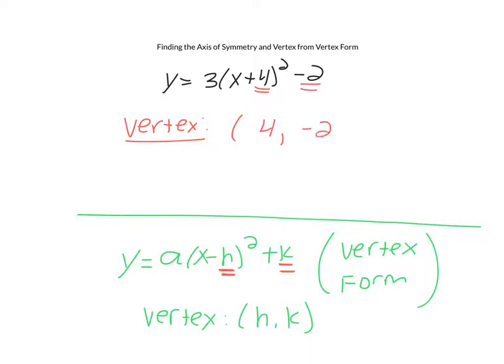But you have to be super careful. Because there's a negative sign built into the vertex form right here, the value that you want to call x in your vertex actually needs to have its sign reversed. So because it is a plus 4 in parentheses, we're actually going to use a negative 4 as the x value.